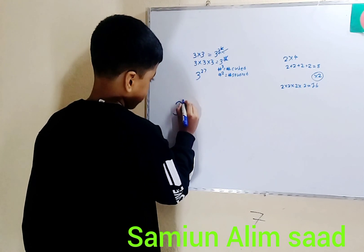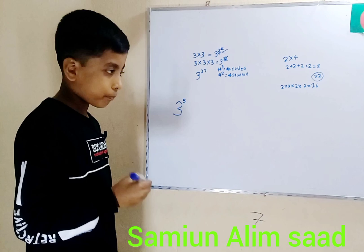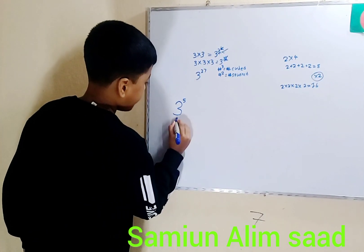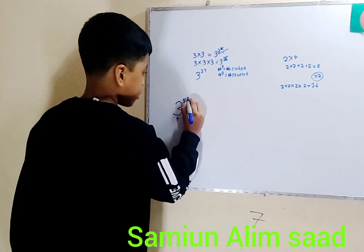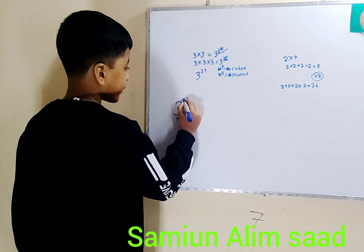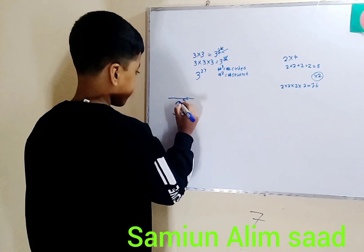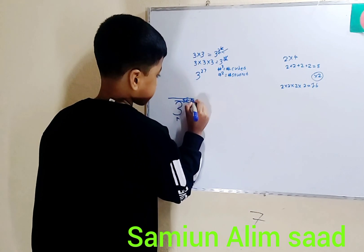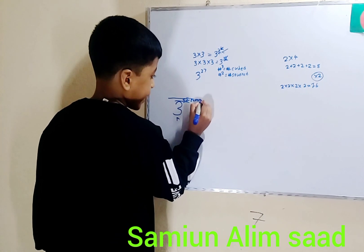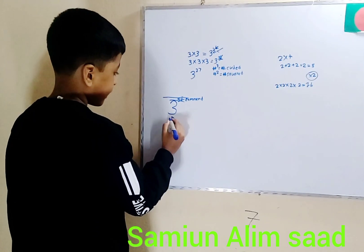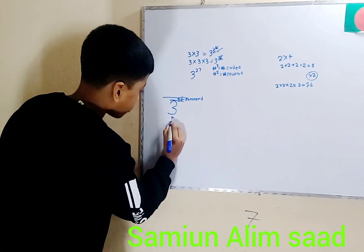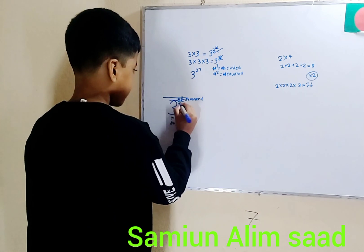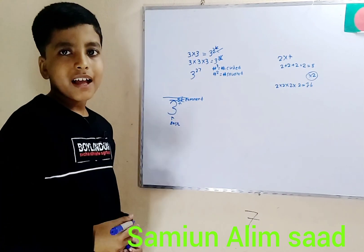Let's take a small example like three to the power of five. When you see a normal-size number with a smaller number written right above it, you know that smaller number is an exponent. The big normal-size number is called the base, and the small number written at the top is the exponent.